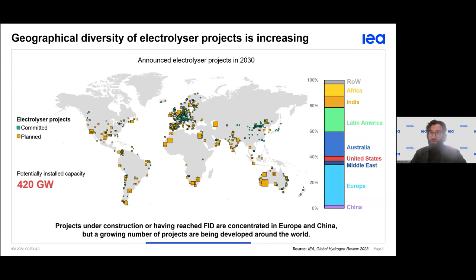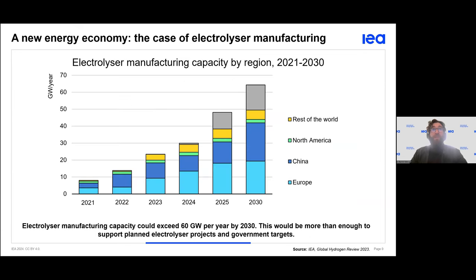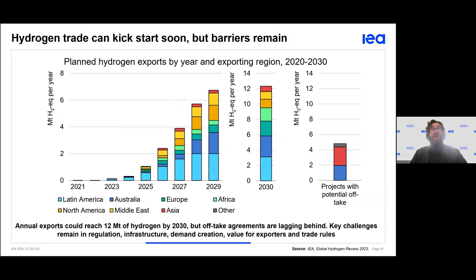Looking at planned projects before 2030, we can see that electrolysis projects have begun to spread globally to avoid long-distance cross-border transmission. This slide also illustrates the development of these electrolysis projects.